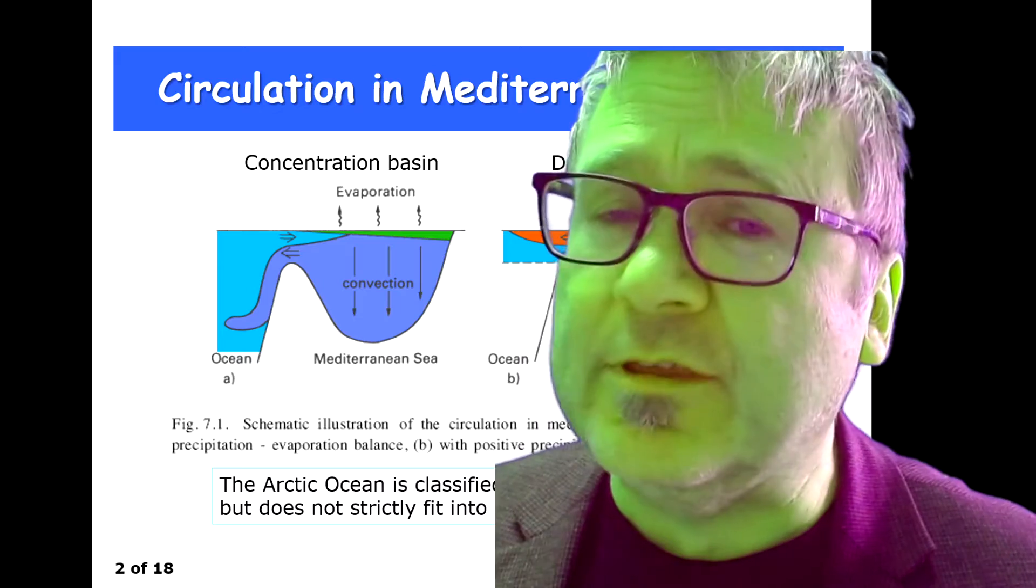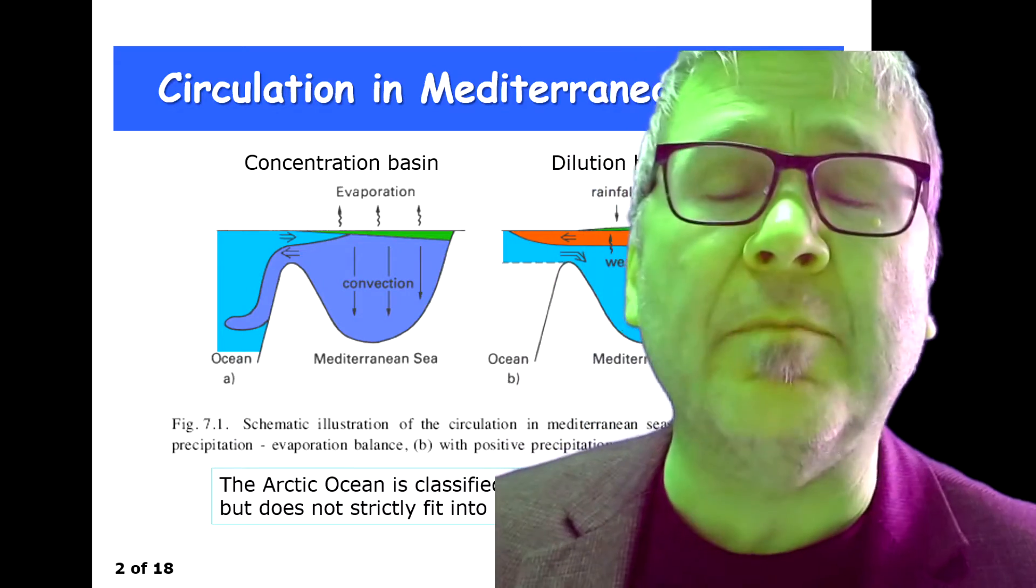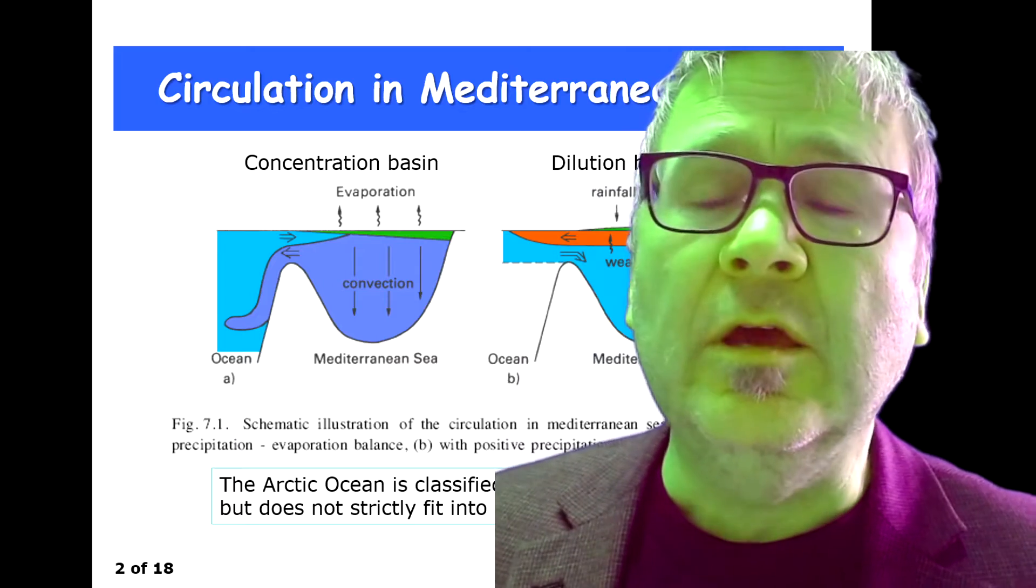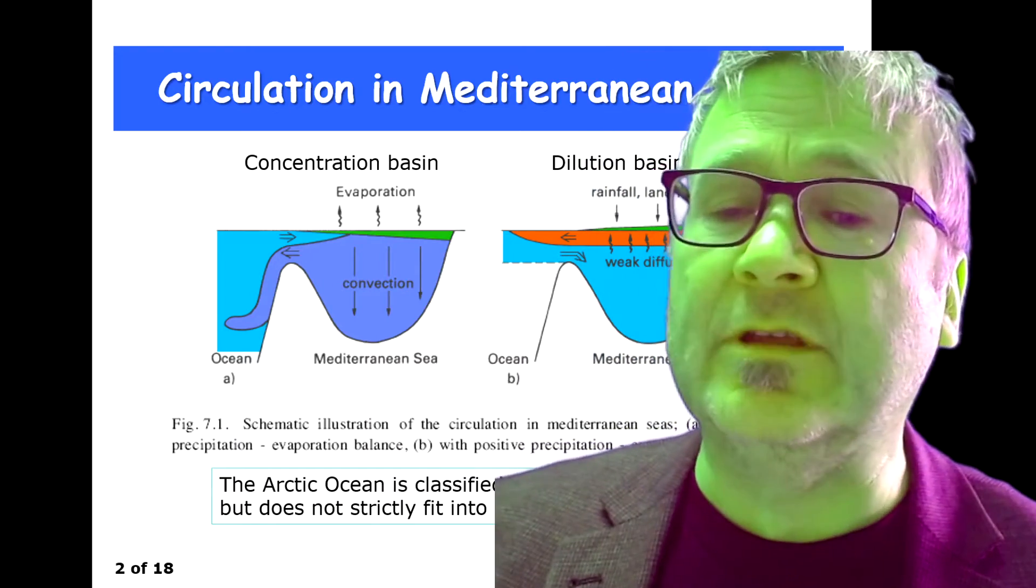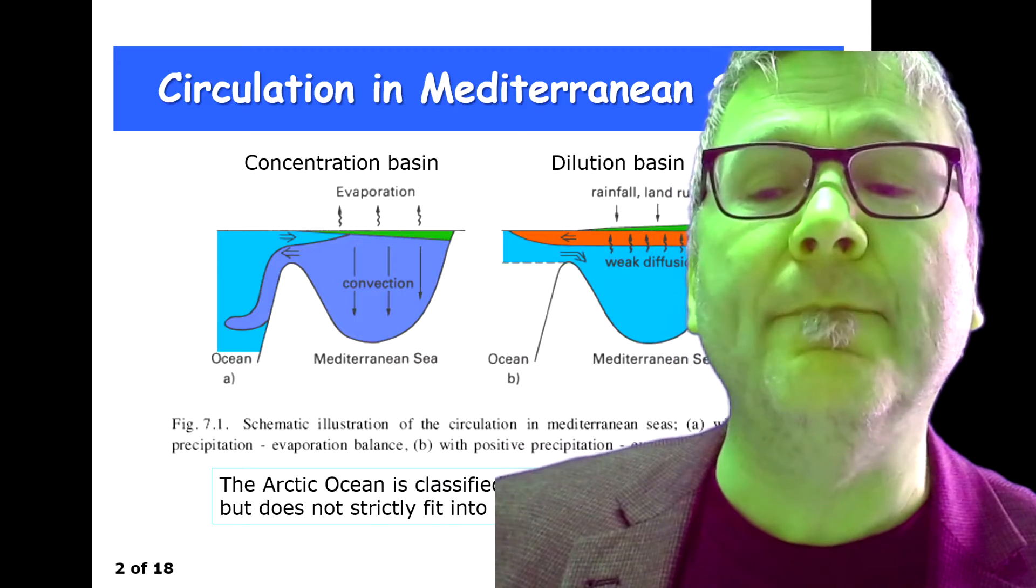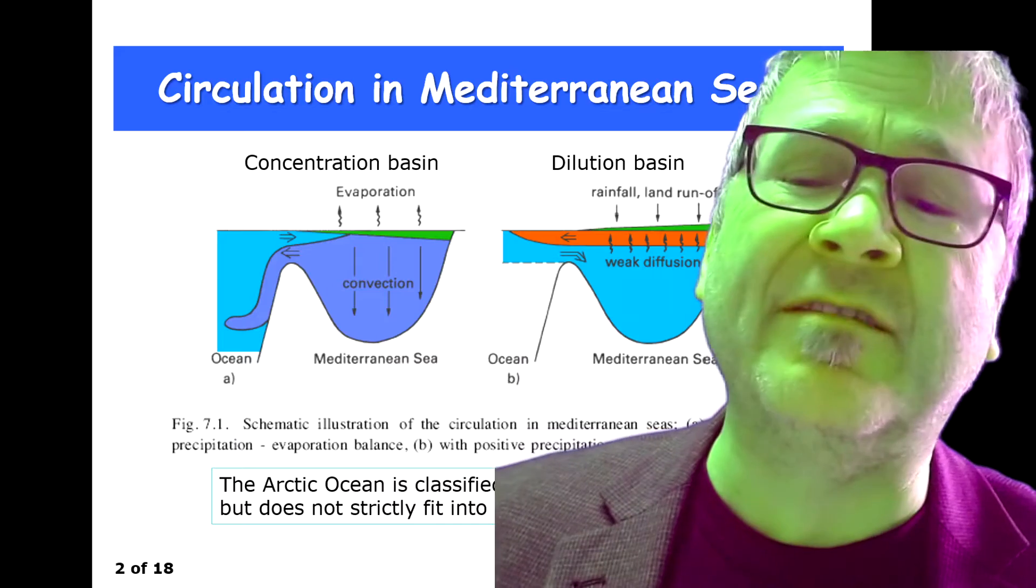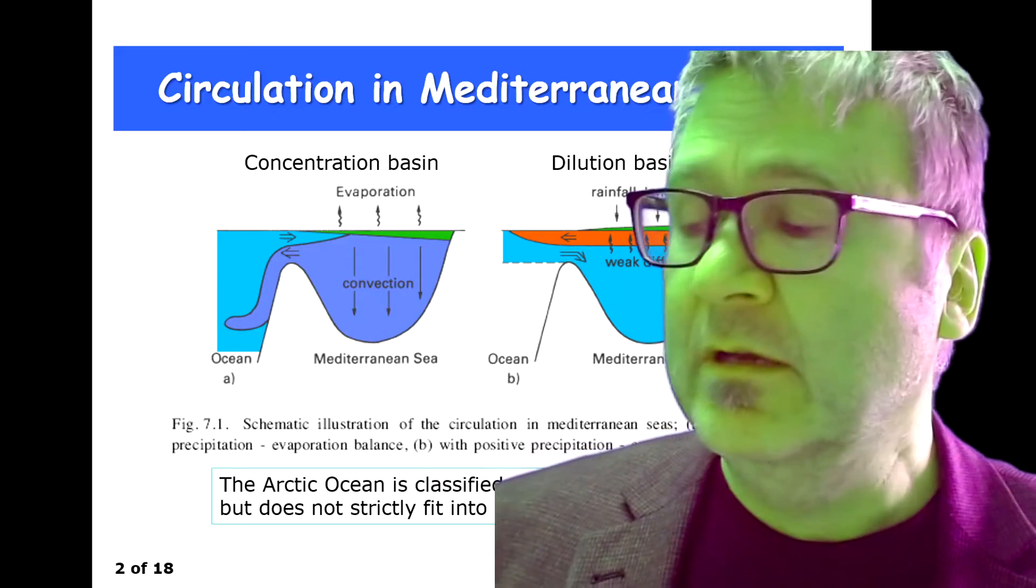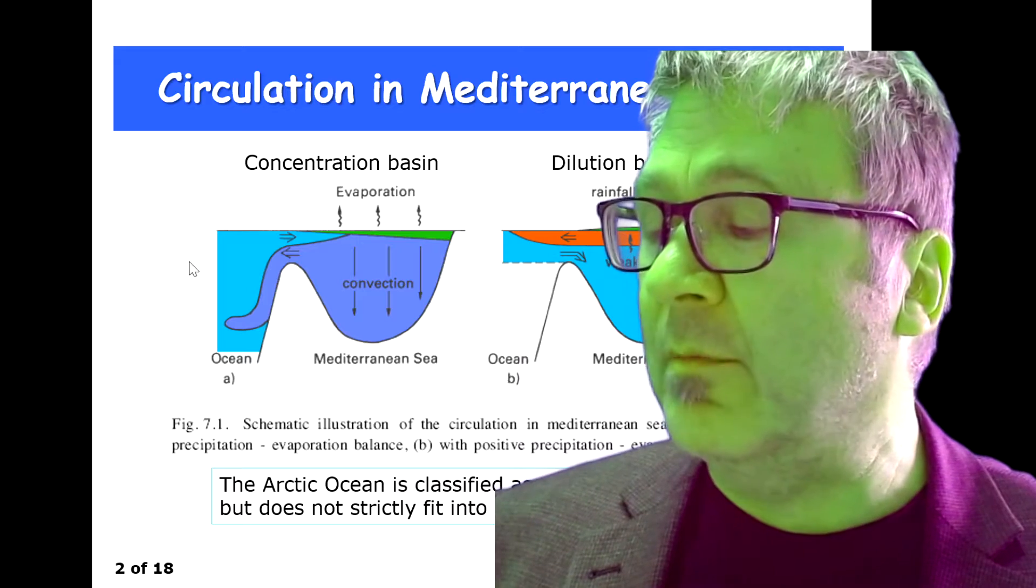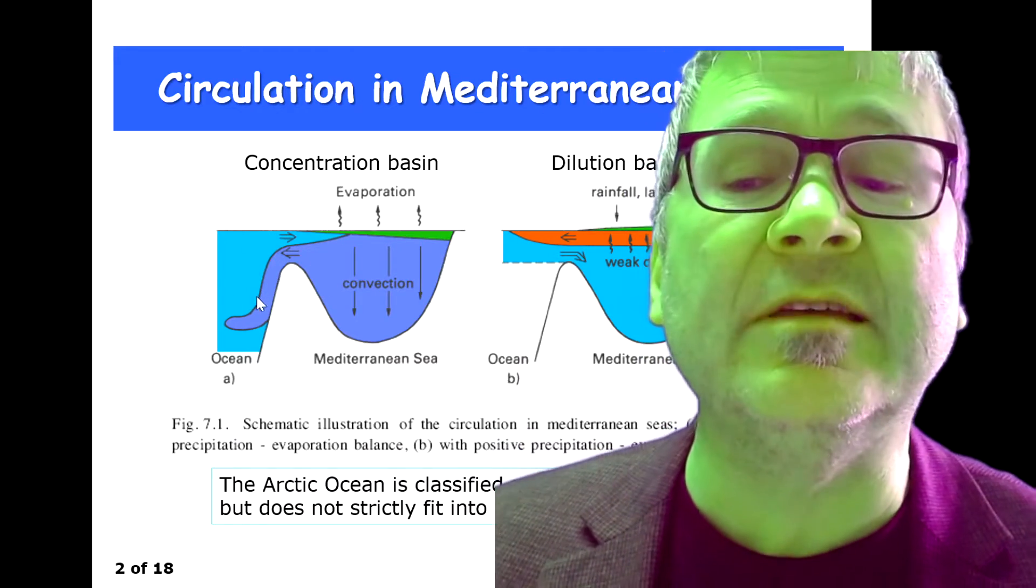But the exchange with the ocean is constrained by the existence of shallow water depth, which is a sill, shown here in these sketches—shallower water. Shallower water really means something like less than the 4,000 meters that you have in the deep basin. We are actually talking about something like 1,000 meters or so.